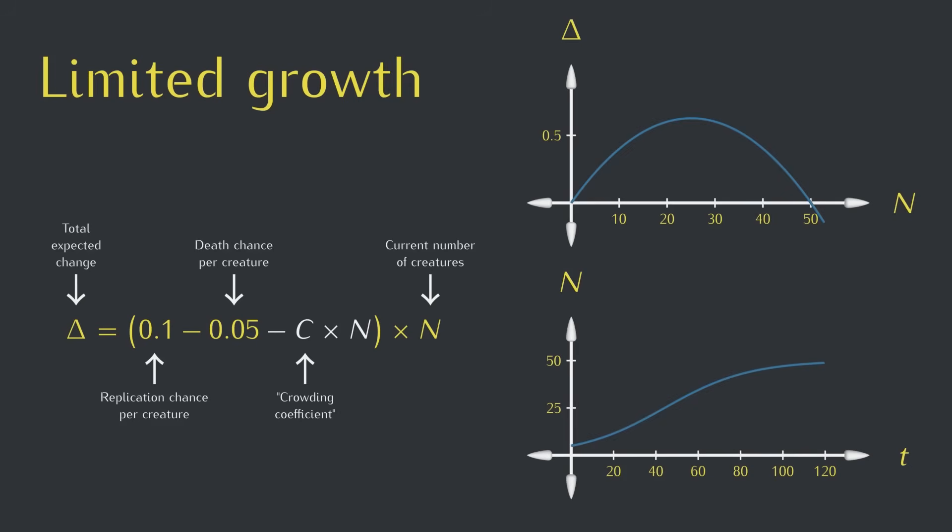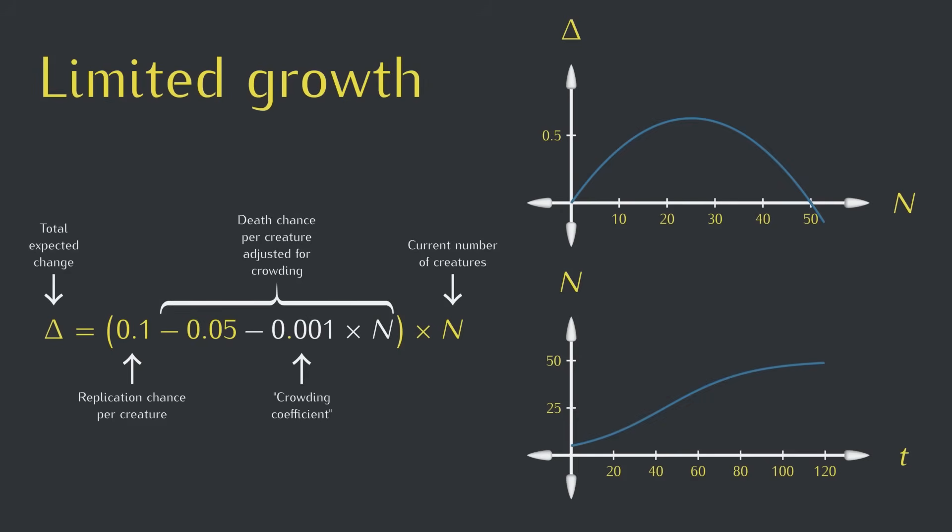So if the value is, say, 0.001, that means adding another creature increases the death chance of all creatures by a tenth of a percent. The new creature is eating food and taking up space, so there's less to go around for everyone else. And when we have a lot of creatures, this term really adds up.